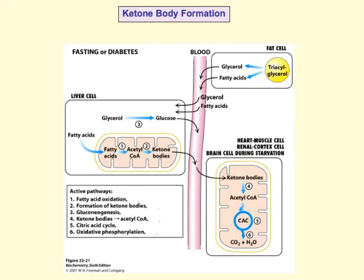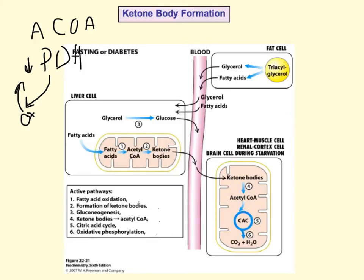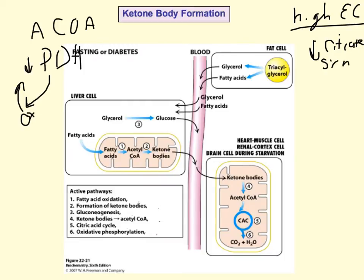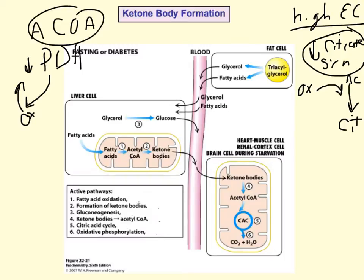During beta-oxidation, you get an increase in acetyl-CoA. An increase in acetyl-CoA will inhibit pyruvate dehydrogenase, which conserves pyruvate to form oxaloacetate for gluconeogenesis. Additionally, as long as the cell has a high energy charge — this is cellular energy charge, not the body — it will inhibit citrate synthase. Citrate synthase is the enzyme that combines oxaloacetate with acetyl-CoA to form citrate. When that's inhibited, acetyl-CoA inside the cell increases and is used to make ketone bodies.